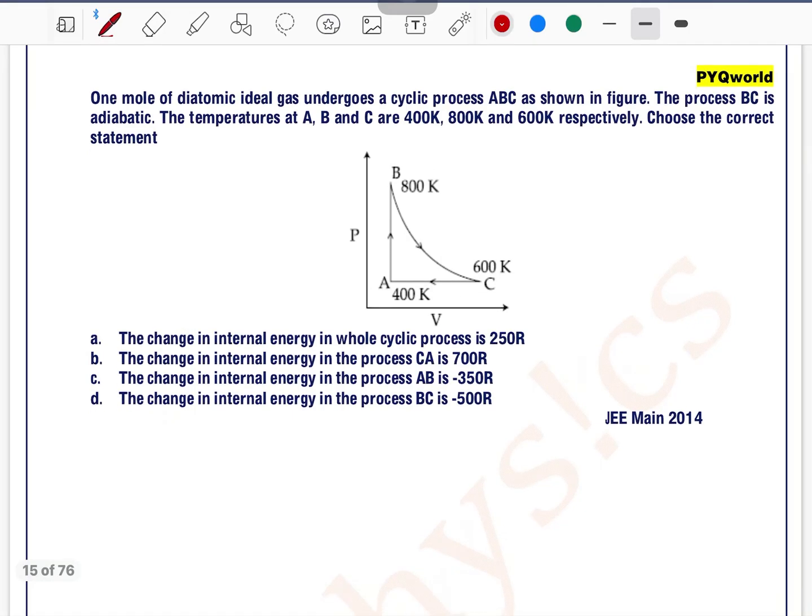One mole of a diatomic ideal gas undergoes a cyclic process ABC as shown in the figure. The process BC is adiabatic. The temperatures at A, B, and C are 400K, 800K, and 600K respectively. Choose the correct statement.